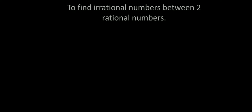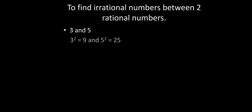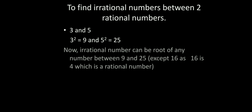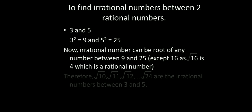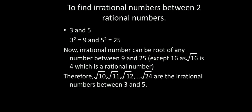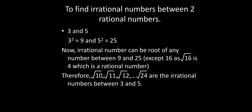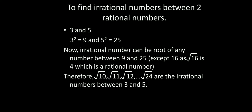To find irrational numbers between two rational numbers, take the example of 3 and 5. 3 squared is 9 and 5 squared is 25. If you take square roots of the integers between 9 and 25, you will find that those roots are irrational numbers.